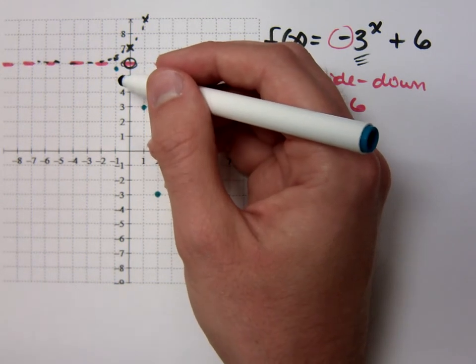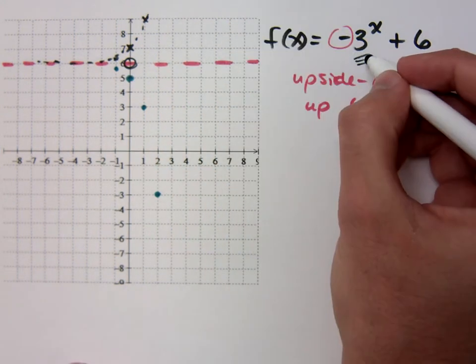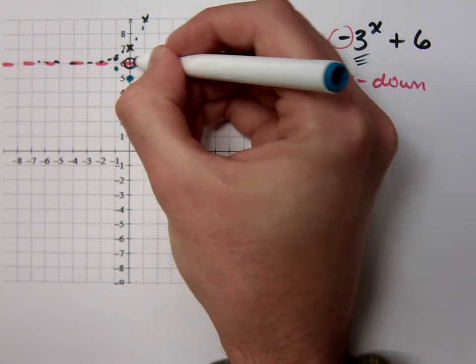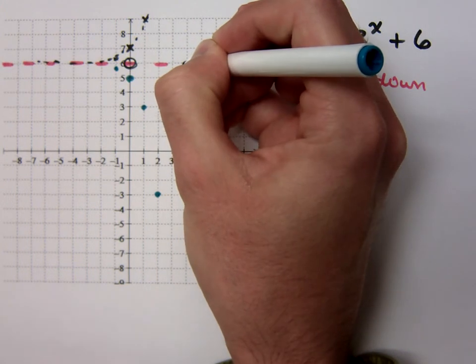I'm going off the exponential shape, which, since my base is 3, every step, every unit that I go is going to be multiplying by 3.